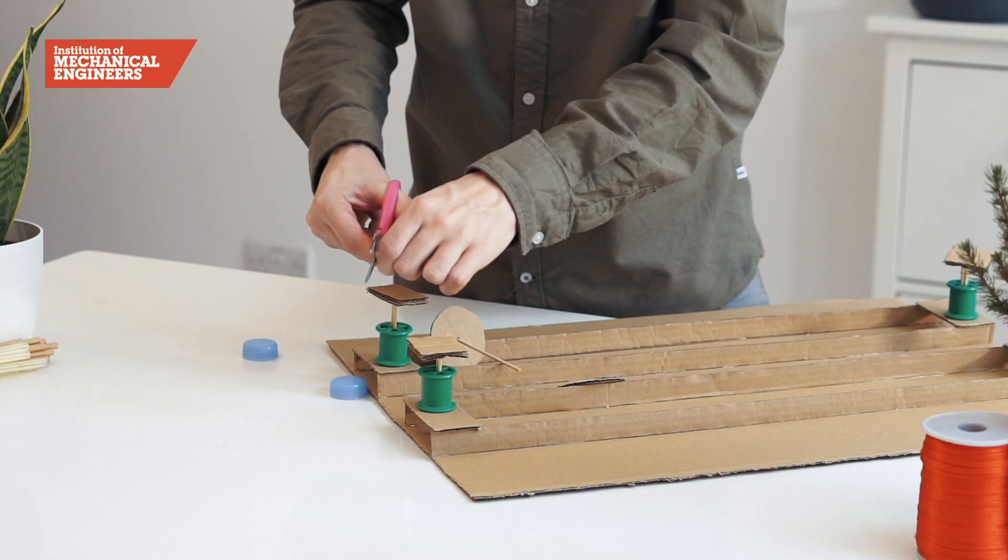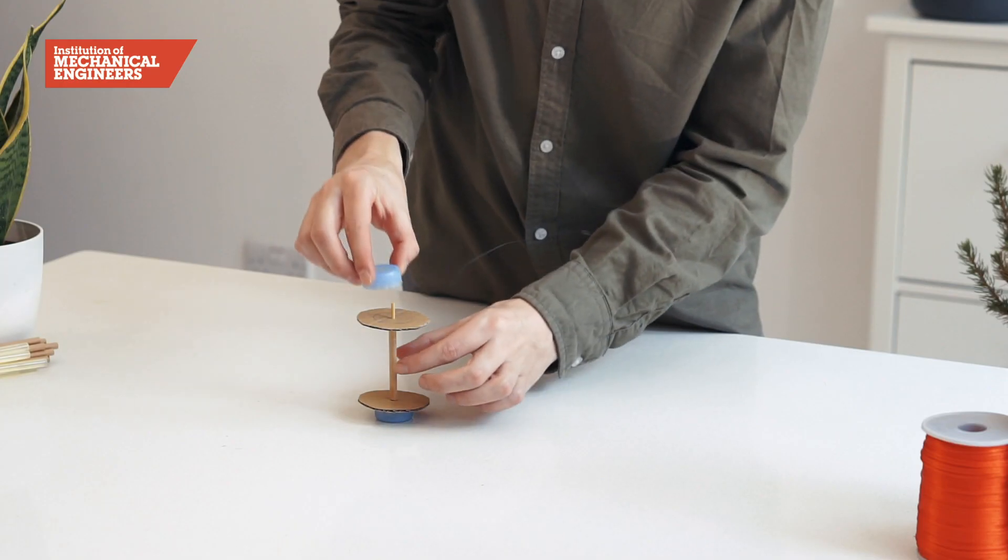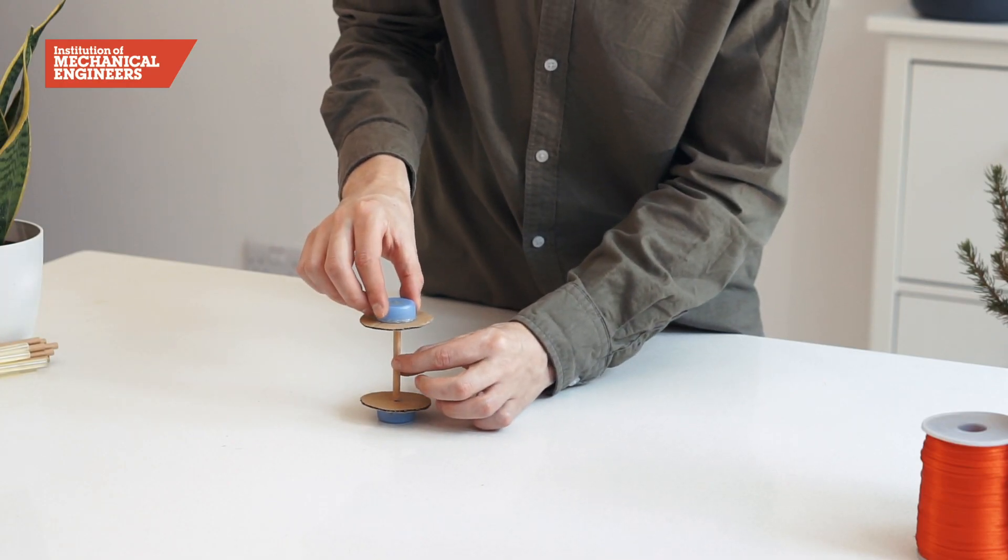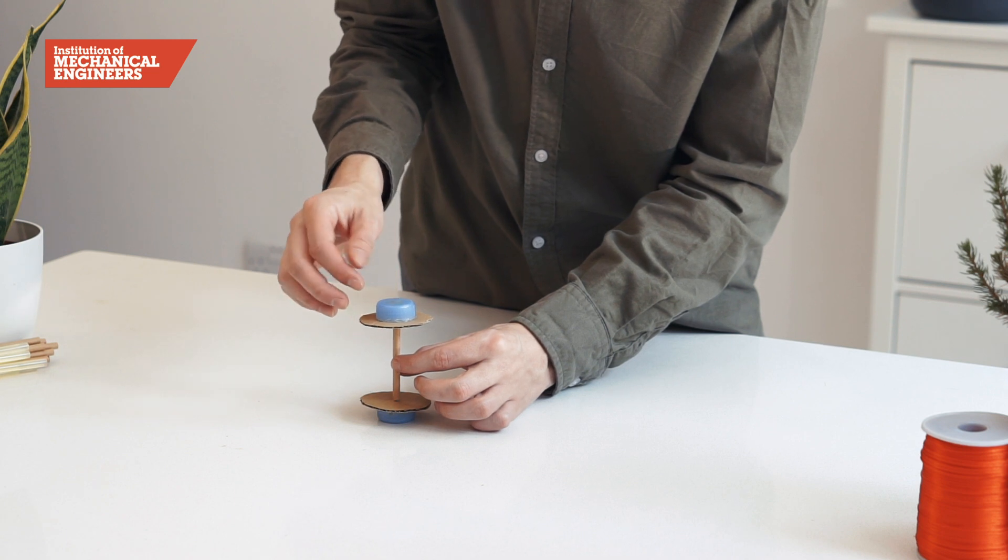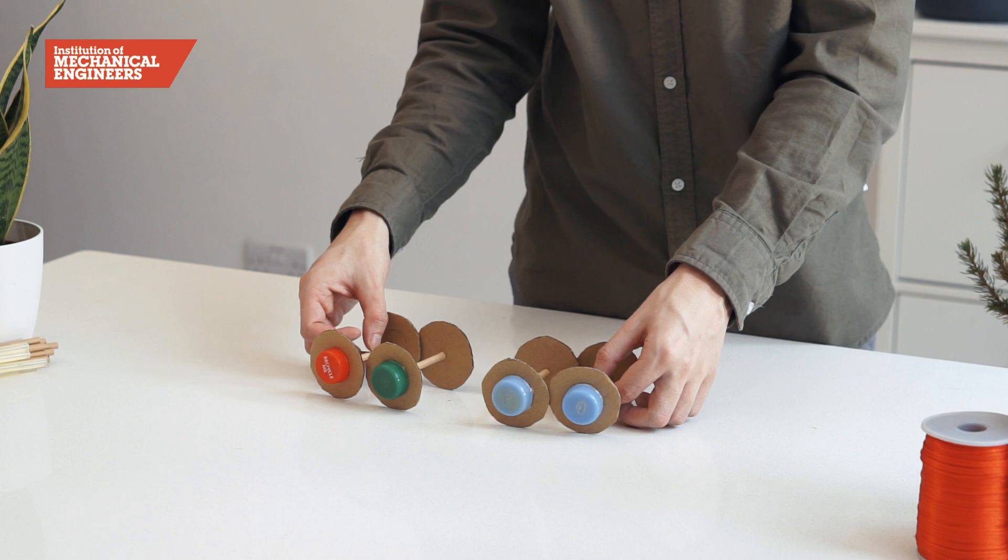After we have made any necessary adjustments glue the bottle tops onto the card discs. Use the smaller circles as a guide to ensure they are attached in the center. Now repeat this step three more times to create four sets of wheels.